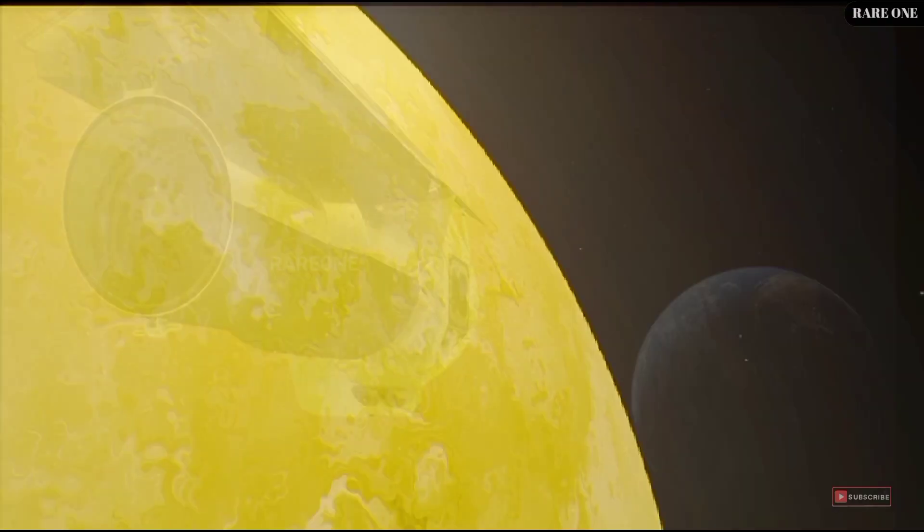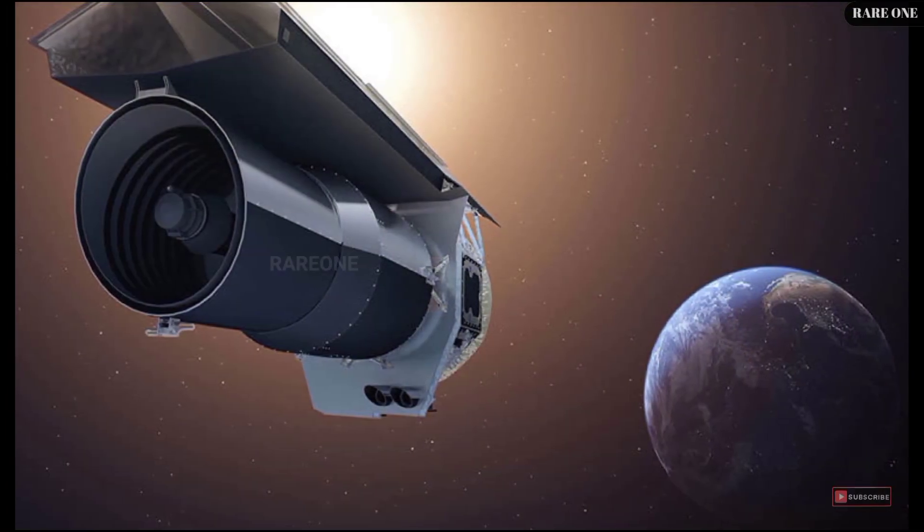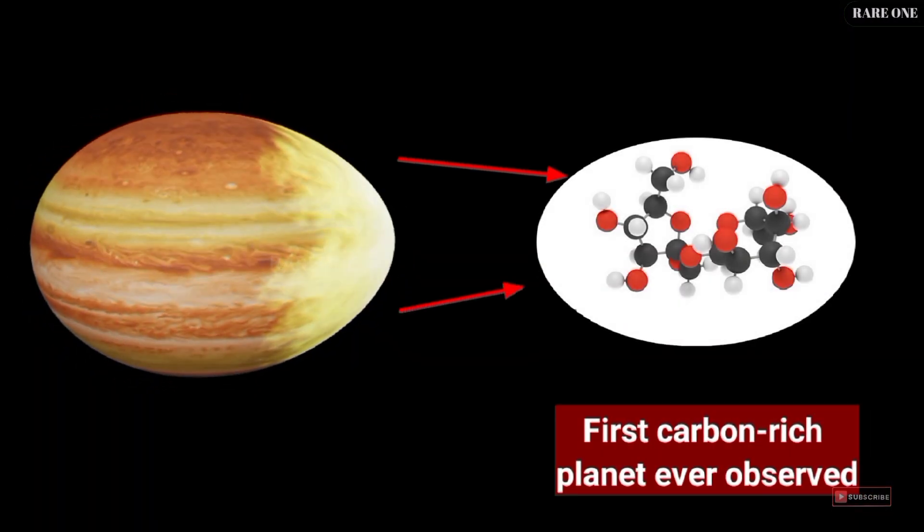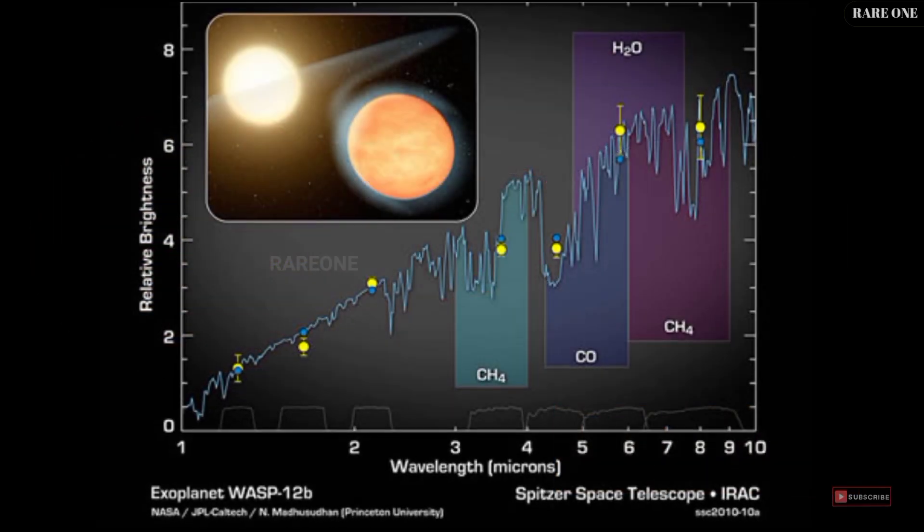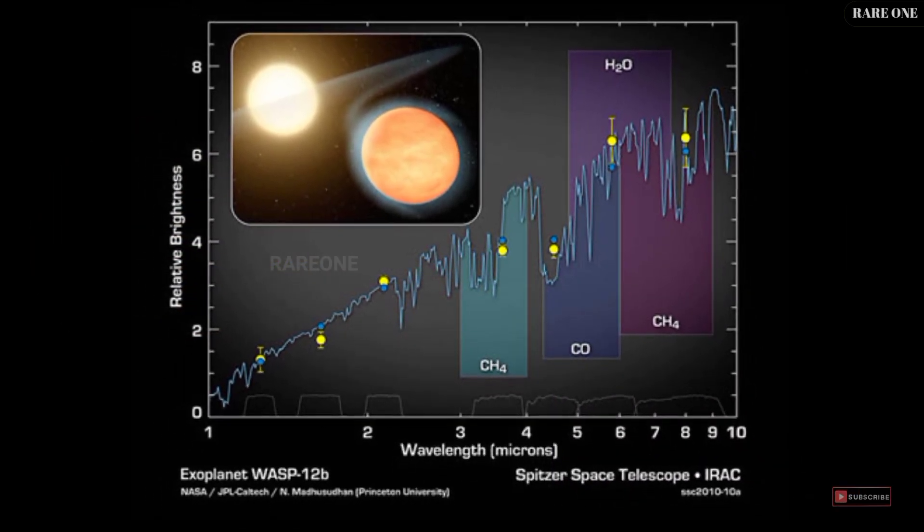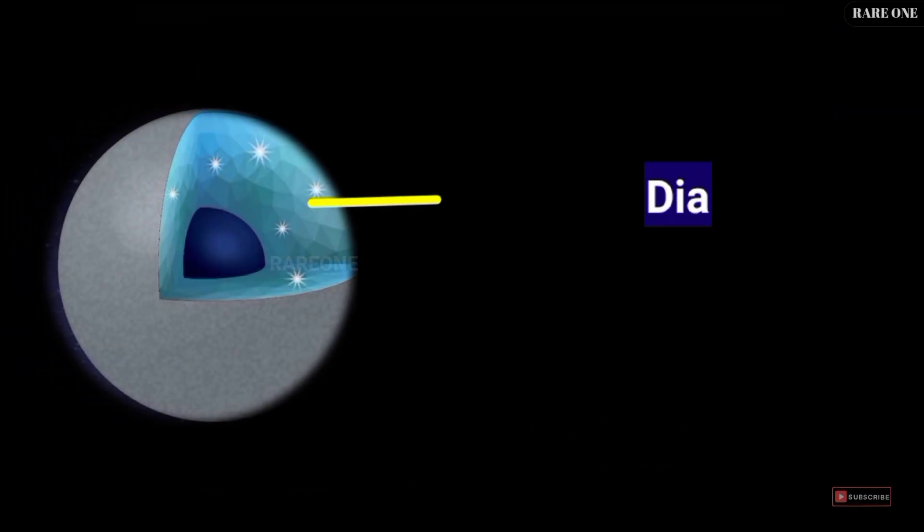But the surprises don't stop there. NASA's Spitzer Space Telescope revealed that WASP-12b has more carbon than oxygen, making it the first carbon-rich planet ever observed. This means that instead of water, which is abundant on Earth and other gas planets in our solar system, WASP-12b could harbor abundant diamond in its interior.